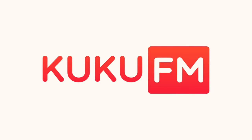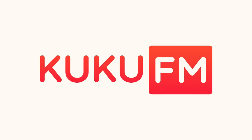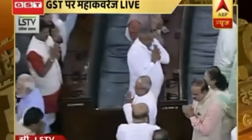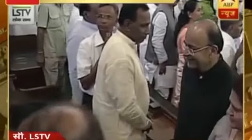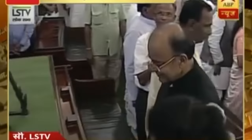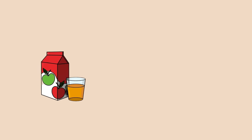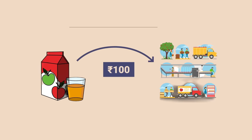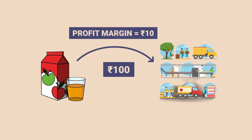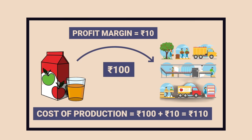This video is brought to you by CuckooFM, but more on this at the end of the video. To understand GST, we first have to understand the fundamental reason why GST was implemented in India and what were the problems in the old taxation system. So let's try to understand this using a story. Let's say a pack of juice costs 100 rupees to manufacture and they have a profit margin of 10%, which means the cost of production is 110 rupees.